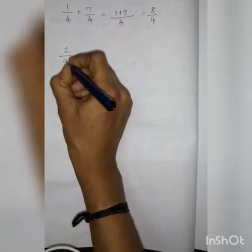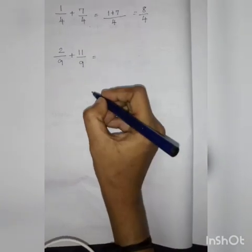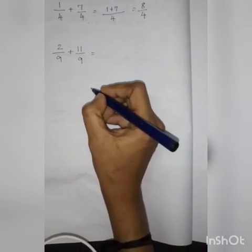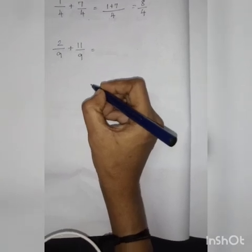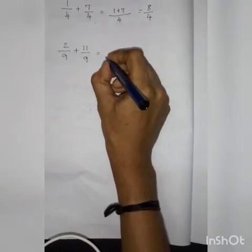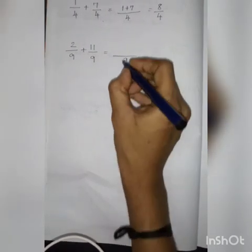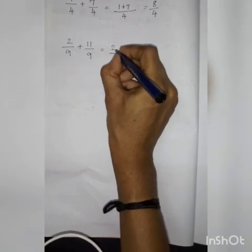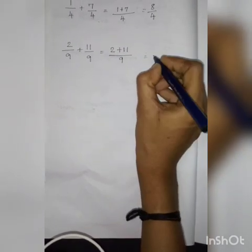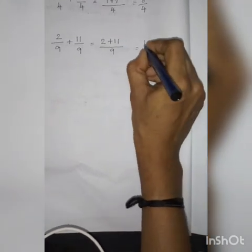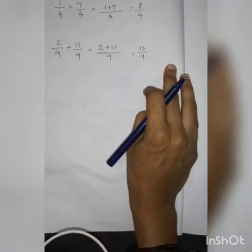Next problem: 2 by 9 plus 11 by 9. Here also, we have same denominators. What is the same denominator here? 9. If there is a same denominator, our denominator will be written as common. Next, I will write the numerators — 2 plus 11. 2 plus 11 is 13, divided by 9. So, 13 by 9 is the answer.